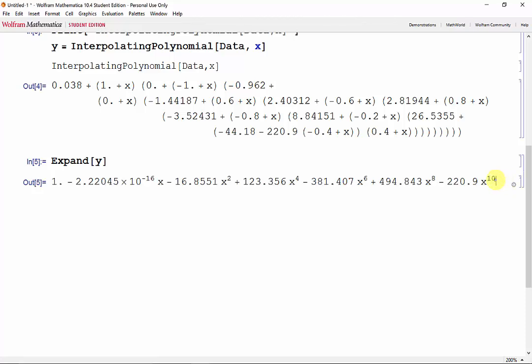And since we had 11 data points, we have a 10th degree polynomial. And if we wanted to evaluate the expression at any value of x, we could just use a rule. So let's say evaluate y when x is equal to 0.5, shift enter, and we get a value.